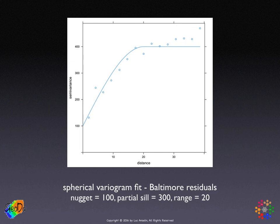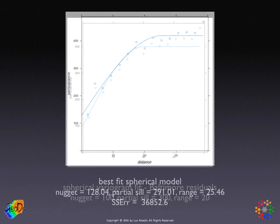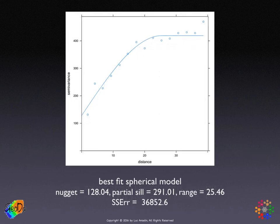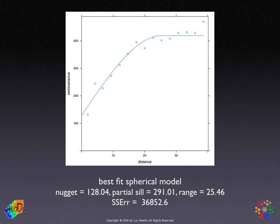Once we get a good starting point, we put it into an optimization routine that iteratively improves the fit of the curve, and we end up with a best set of parameters. In our case, we weren't too far off but not exact either. The nugget, as a result of this optimization, was roughly 128. The partial sill was 291, so the overall variance is just over 400. The range is 25.5 instead of the 20 we eyeballed. Importantly, because it is an optimization process, we get a measure of fit — the sum of squared errors — which allows us to compare different models fit on the same empirical variogram.